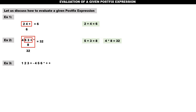Example number three. From the left, go on scanning until you get an operator. You get operator plus. When you get plus, the two operands before plus are two and three. So two plus three is five. After that, the next operator is minus. The two operands for minus are one and five. Therefore, one minus five is minus four. Next: four, five, six.